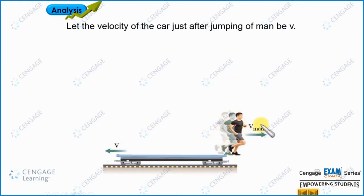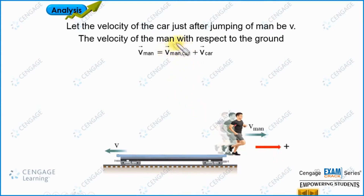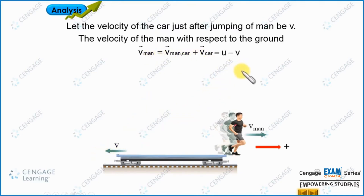We need to calculate the velocity of the man with respect to the ground, because in conservation of linear momentum we must use velocities with respect to ground. The velocity of the man with respect to ground equals the velocity of the man with respect to the car plus the velocity of the car. Taking rightward as positive, the man's velocity with respect to car is u, and the car moves leftward at v, so the man's velocity equals u minus v.